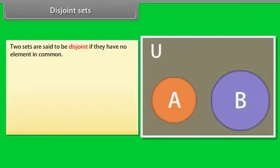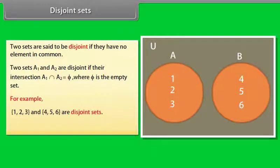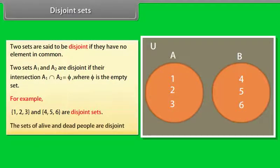Disjoint sets. {4, 5, 6} are disjoint sets. Disjoint sets can be represented by means of a Venn diagram as shown.